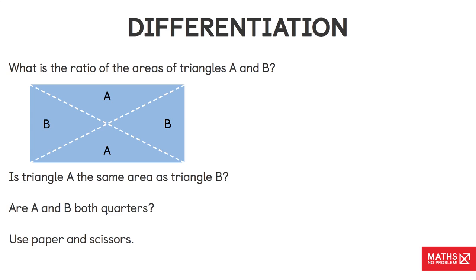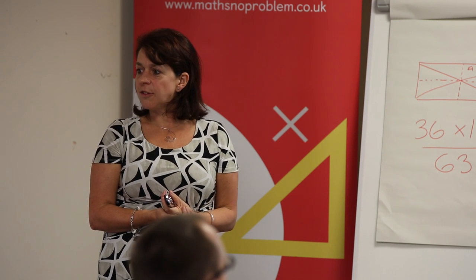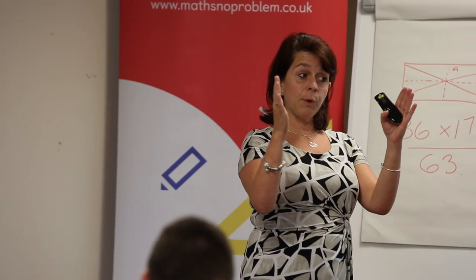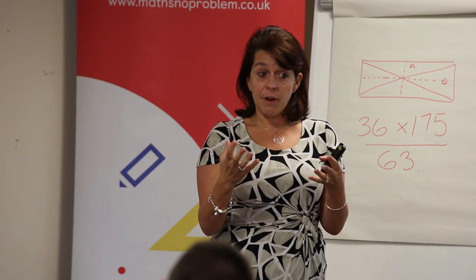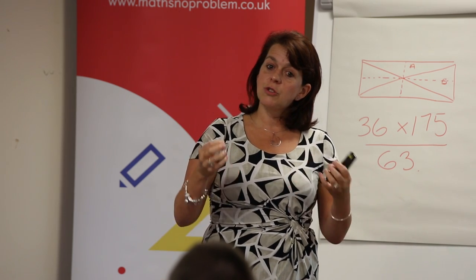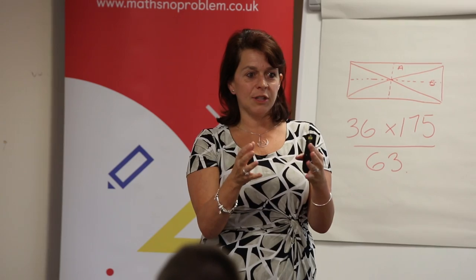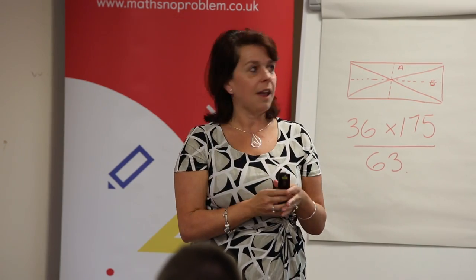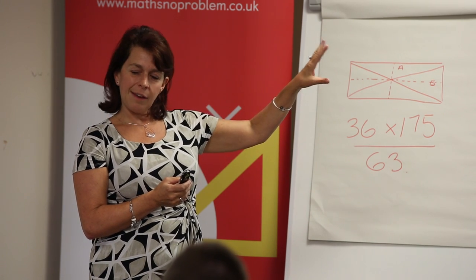This actual question is in the Year 1 book in the Maths No Problem textbooks. When I first saw that I thought it was pretty sophisticated for Year 1, but it just follows on from what we've been doing with the teddy bears earlier. We're thinking: same area, different appearance. They're quarters, but they don't have to look the same. Right from the beginning, children are encouraged to think about maths how it really is, not based on perception of what things look like. That's why children in Year 1 are able to think about it and say: yes, they are quarters.